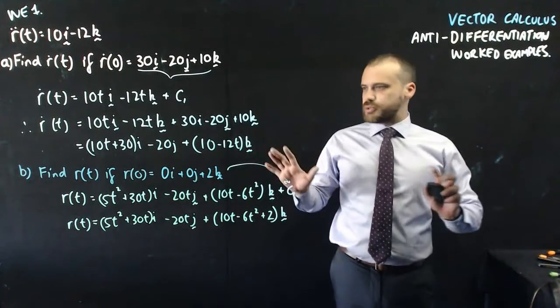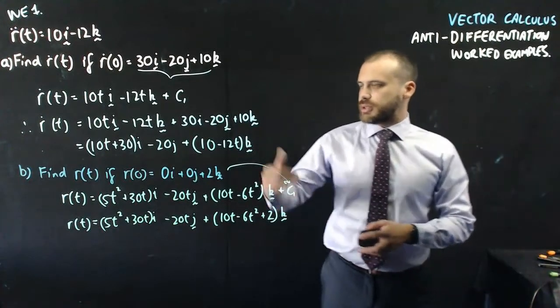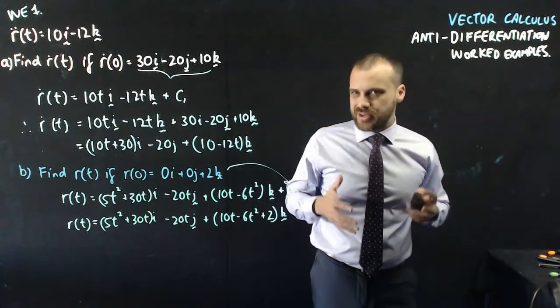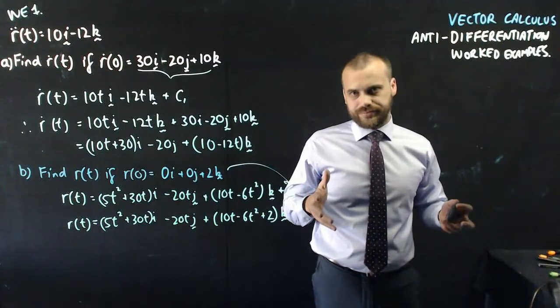All right, let's keep this one short and sweet. Not much more to say here. Just keep in mind that when you are anti-differentiating, there's always this plus c on the end. Don't forget it. Don't forget it.